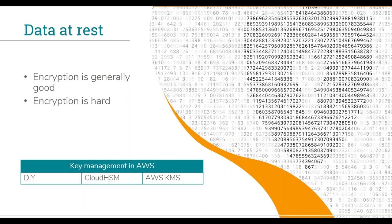Keys need to be secured in their own right — confidential and highly available — so you need a system that will take care of that. There are different choices for key management in AWS: a do-it-yourself approach using applications from vendors like Gemalto or Symantec; Amazon's own Cloud HSM, which is a hardware security module where you get a dedicated HSM appliance — AWS manages the hardware but hands over full control to you with no access to the crypto functions.